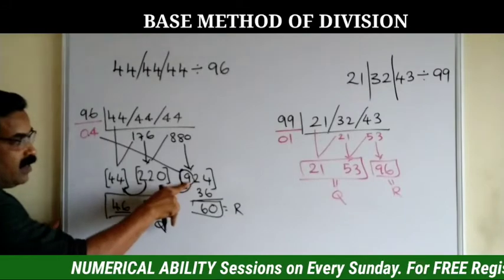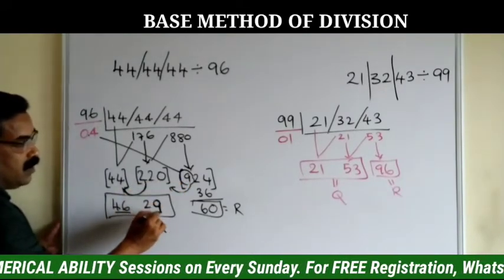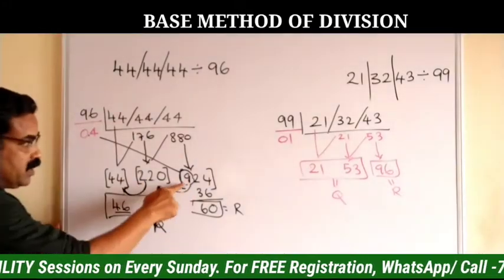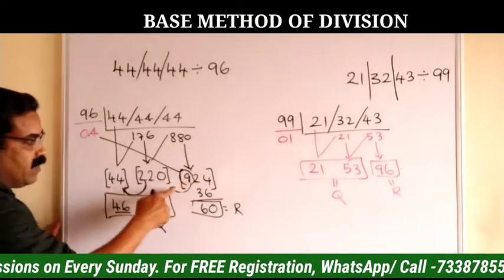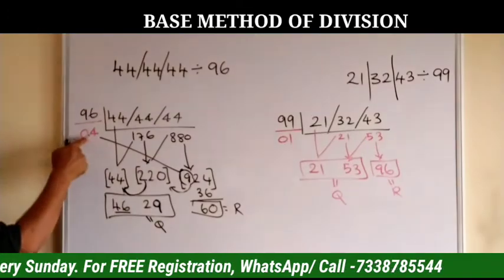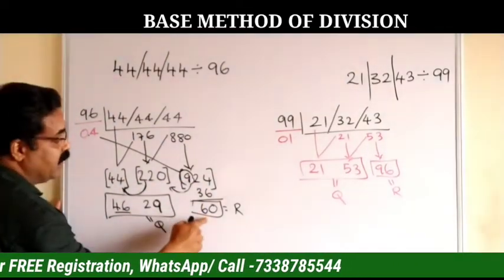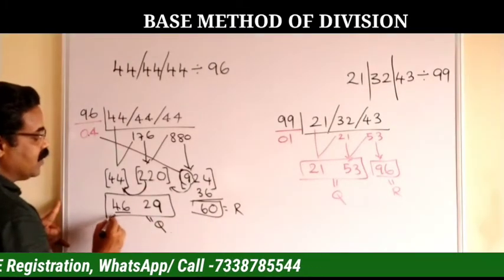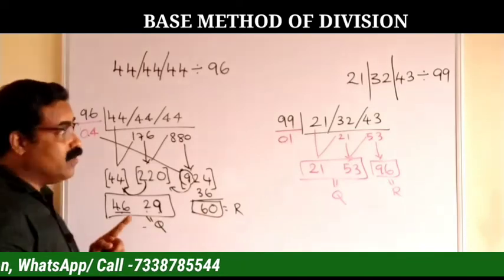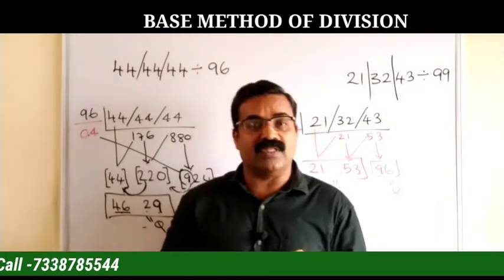This 9 is used two times: first, 20 plus 9 becomes 29 for the quotient digit, and second, the same 9 is multiplied by the difference 4 — so 4 times 9 is 36 — and added to get the remainder. So 4629 is the quotient and 60 is the remainder when this number is divided by 96.